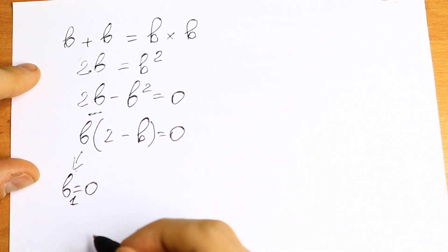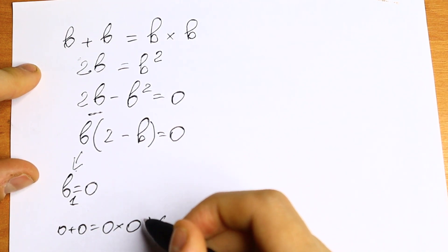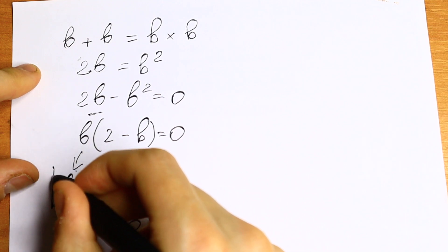We can check this root. We will have zero plus zero equals zero times zero, which is correct. So b equals zero is our first root.